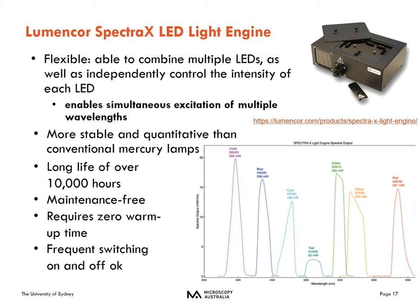We also have systems that use the Lumencore Spectra X LED light engine. What's neat about the Spectra X is that instead of being a white light source, it provides individual wavelengths of light. You can turn off individual wavelengths without using excitation filters — it all comes right from the light source. This enables simultaneous excitation of multiple wavelengths without a filter wheel, which can be really useful for experiments with two cameras.